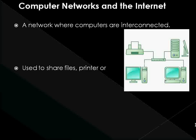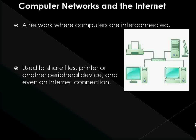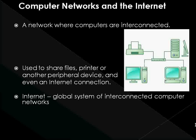A computer network can be used to share files, printers, or other peripheral devices, and even an internet connection. The internet is a global system of interconnected computer networks that interchange data by packet switching using the standardized internet protocol suite, TCP/IP. The internet carries various information resources and services such as electronic mail, online chat, file transfer, and file sharing. There are different types of networks, and the most common example is the one you use to access the internet — the latter is in fact a very large network that connects millions of computers together.